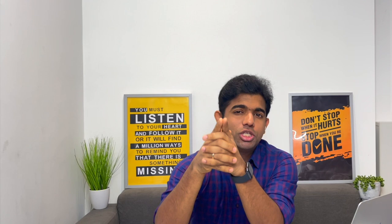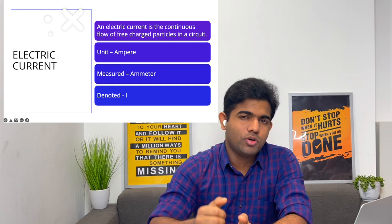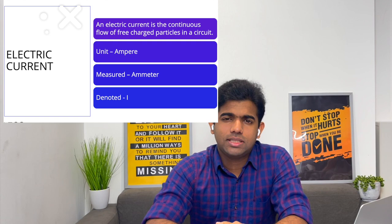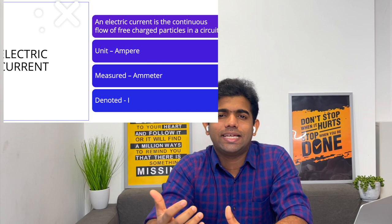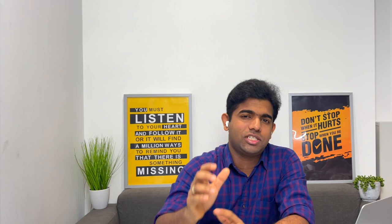Electric current is measured by a device known as the ammeter, and the unit of electric current is the ampere, often represented by the letter I. This is very important — they might ask in a viva what the unit of electric current is or how you measure it. When reporting values, you must include the unit, for example '10 amperes,' as a number alone is meaningless.